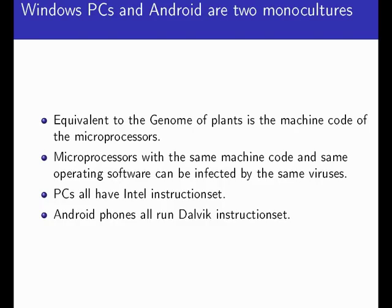The equivalent to the genome in a plant is the machine code of a microprocessor. Microprocessors with the same machine code and same operating software can be infected by the same viruses. PCs, for example, all have the Intel instruction set. Android phones all run the Dalvik instruction set. Each of these constitutes an ecosystem that is a monoculture and is subject to a given set of viruses. Android is somewhat safer since Dalvik is a Java virtual machine code and Java is safer than C.